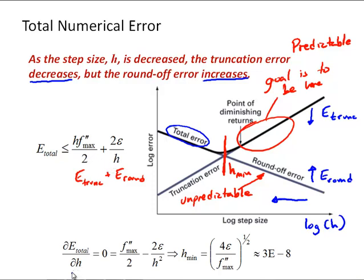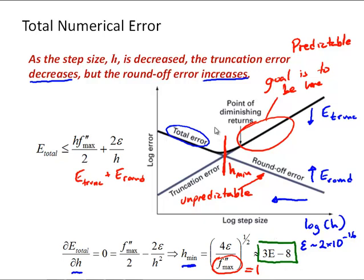We can take the derivative of that and set it equal to zero with respect to h to find that minimum step size — the local minimum on the total error curve. Taking that derivative and setting it equal to zero gives us f″_max/2 minus 2ε/h² = 0. Solving for h_min: h_min equals the square root of 4ε over f″_max. Using epsilon as 2 times 10 to the minus 16 and treating the second derivative as order 1 for this order-of-magnitude analysis, we get a minimum step size of about 3 times 10 to the minus 8.